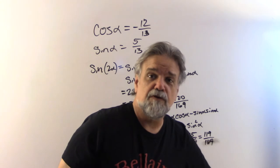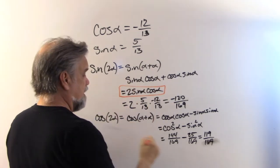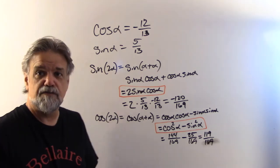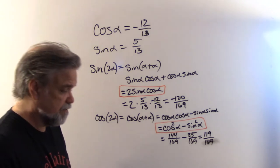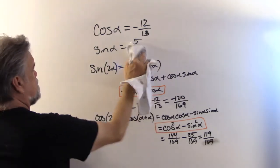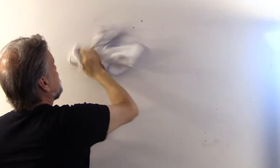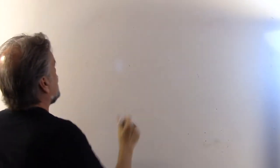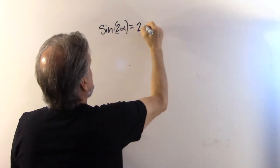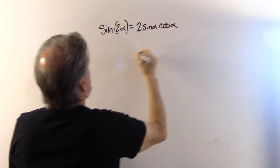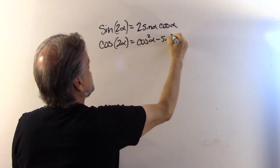What I really want you to focus on is not the final answers, but the identities we derived in the process. We came up with new identities for the sine of 2α and the cosine of 2α. The sine of 2α equals 2 times sine α times cosine α. Meanwhile, the cosine of 2α equals cosine squared α minus sine squared α — we just proved that.